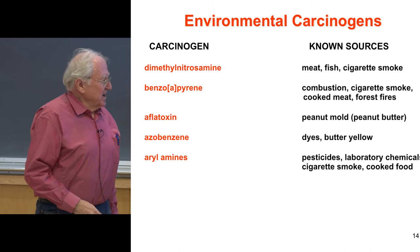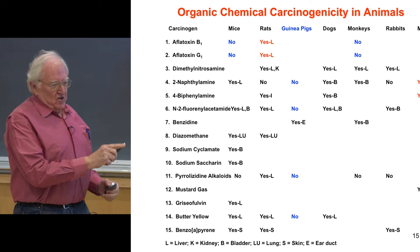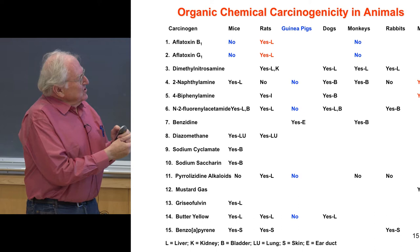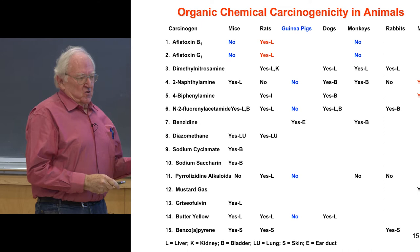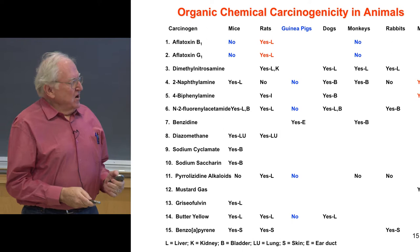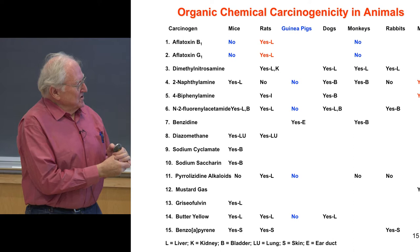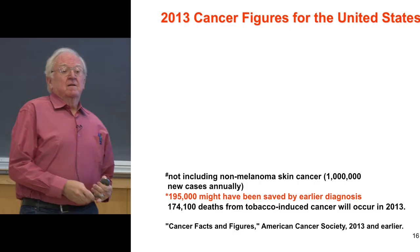Not all of these carcinogens cause cancer in all different animal types. Aflatoxin is very carcinogenic in rats, but not in monkeys, not in mice. Guinea pigs, which are the most susceptible animal to dioxin, don't get cancer from aromatic amines. Not every animal species is susceptible to these carcinogens.